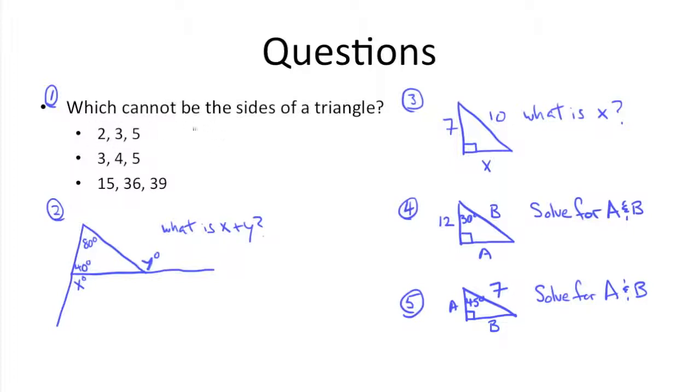So first up we have 2, 3, and 5. Two plus three is five. That's not greater than five, obviously, so that means that this triple can't represent the sides of a triangle. Three, four, five: three plus four is seven, which is greater than five, four plus five is nine, which is greater than three, and three plus five is eight, greater than four, so this works.